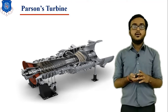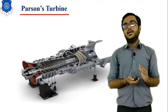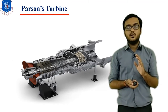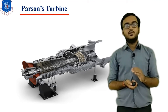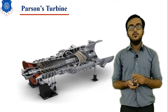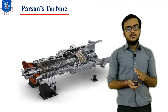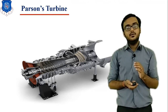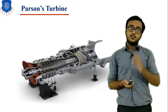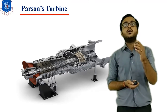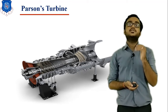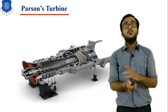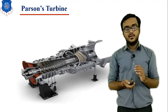In today's session, I would like to start a new topic related to the Parsons Turbine: the Condition for Maximum Efficiency of Parsons Turbine. Before starting, recall the previous statement — in order to understand this lecture thoroughly, you need to have some knowledge of velocity triangles. Based on the velocity triangle, we are going to derive some mathematical relationships indicating the condition required to achieve maximum efficiency for the Parsons Turbine.